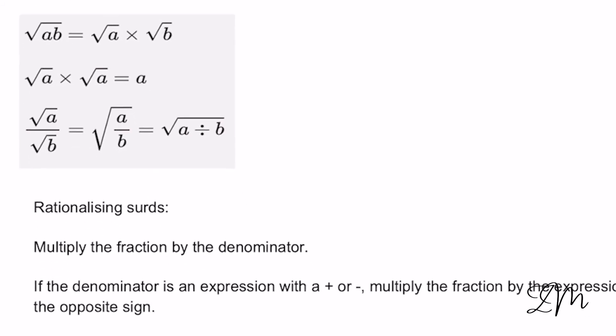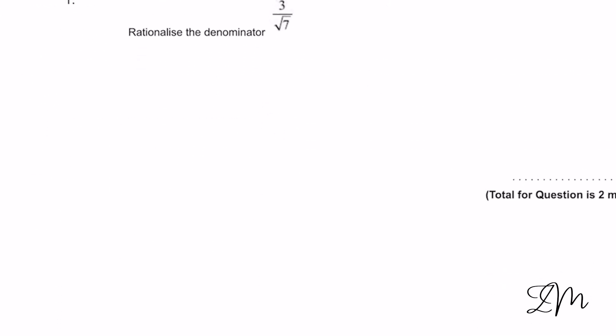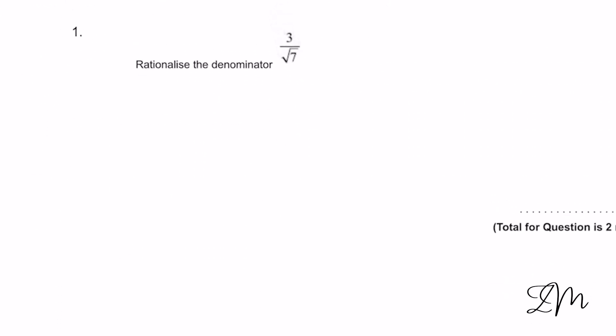The other thing is you need to be able to rationalize. All that means is roots — we hate them on the denominator, so we multiply them out. We use this rule where √A times √A gives us A in order to multiply them up. Let's have a look at these questions — we've got 3 over √7.